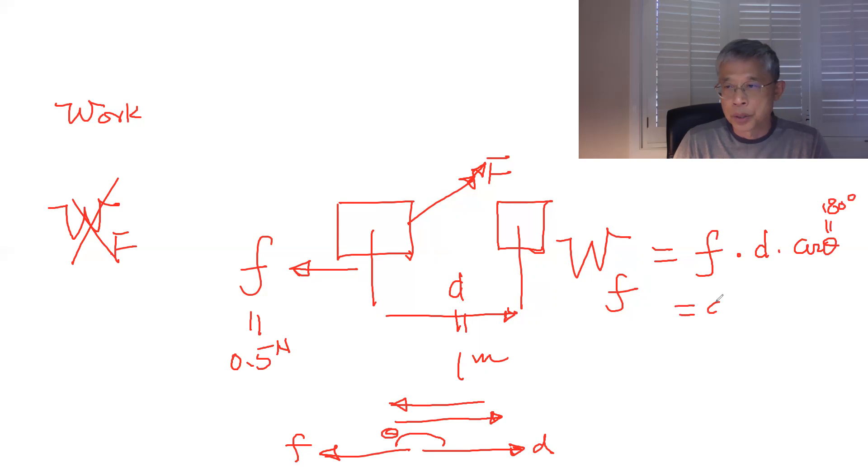And this theta is equal to 180. So then that's equal to 0.5 times one and then times minus one. So you can see this work done by the friction is negative. So it's negative 0.5 joule. Okay. So that's another example of work done by forces, constant force.